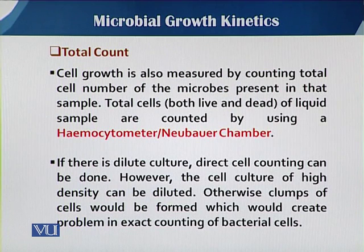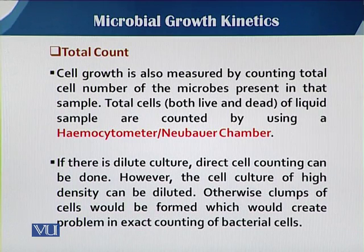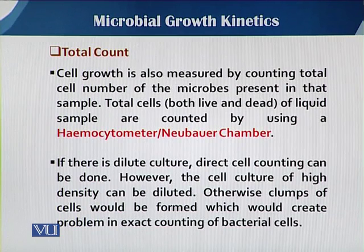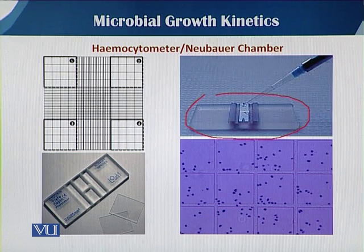The second method is the total count, which is a cell growth measurement in which we count total cells including both viable and dead cells. The total count is mostly done with the help of a slide called a hemocytometer. If the culture is very dilute, we can directly use that culture, but when the culture is very turbid, we first dilute the sample.